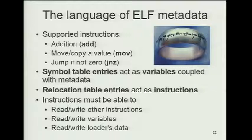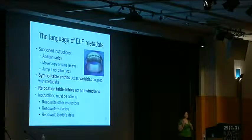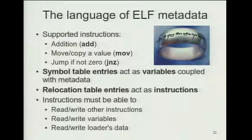The ELF metadata language has three basic instructions: add, move/copy, and jump-if-not-zero, giving us branches. This is just from metadata — no code added, no code changed in the executable, only metadata. Symbol table entries act as variables, coupled with metadata; I like to think of them as memory-mapped registers. The relocation entries act as instructions. To get the full power of the weird machine, you need to be able to read and write other instructions (other relocation entries), read and write other variables (symbols), and read or write the loader's data — the link map data shown earlier.